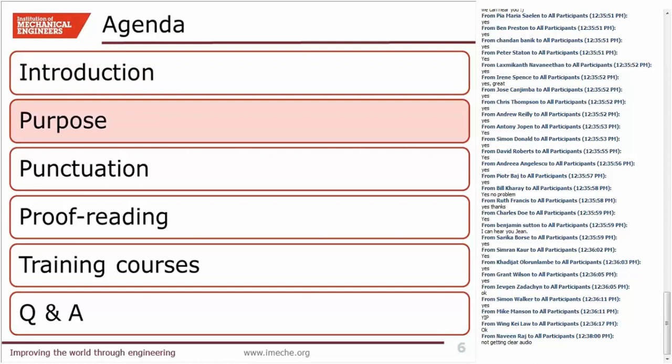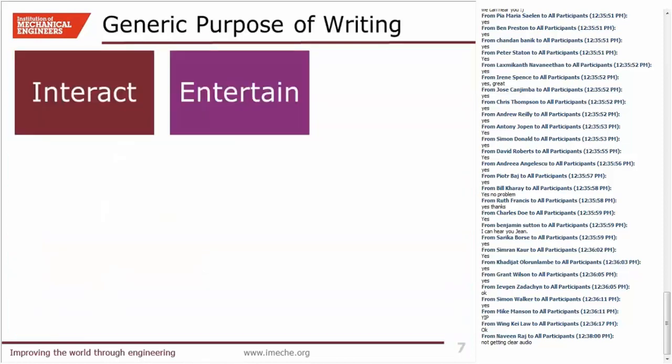So, purpose. You need to be clear on the purpose of your writing — that's key to successful communication. Before you launch into writing anything, it's worth taking a moment to be clear about your objective. What are you trying to achieve?